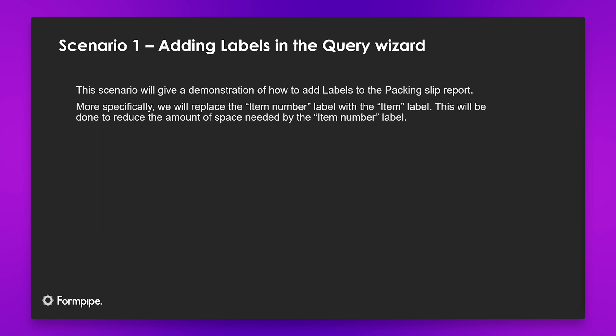And now we will move on to a scenario where we add labels using the query wizard. For this scenario, we will demonstrate the functionality by adding the labels to the packing slip report, and more specifically, we will replace the item number label with the item label. This will be done to reduce the amount of space needed by the item number label. So let's open up our Dynamics environment.